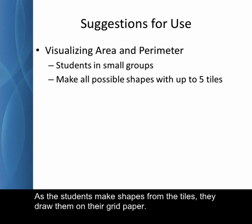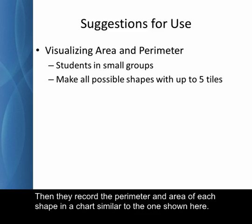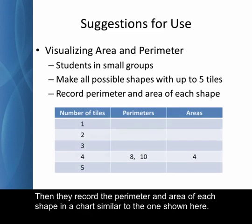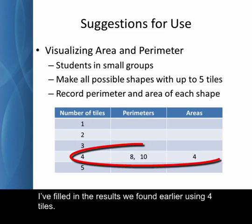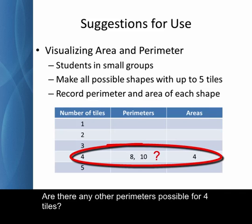As the students make shapes from the tiles, they draw them on their grid paper. Then they record the perimeter and area of each shape in a chart similar to the one shown here. I filled in the results we found earlier using four tiles. Are there any other perimeters possible for four tiles?